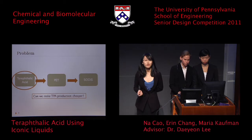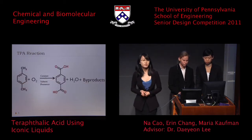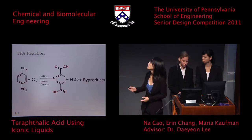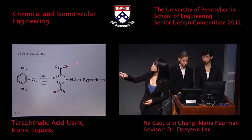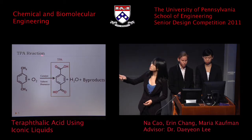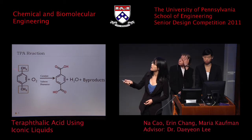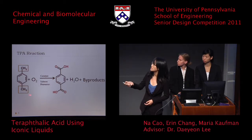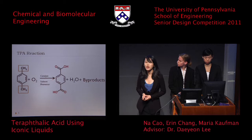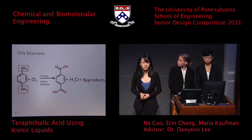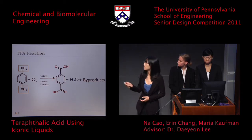TPA has two carboxyl functional groups. The easiest way to make these two carboxyl functional groups is to oxidize the two alkyl groups of paraxylene using oxygen. This reaction is conducted in the presence of a catalyst as well as a promoter.